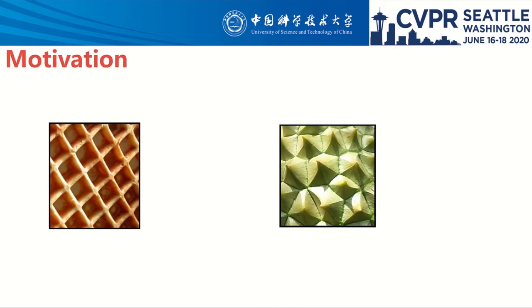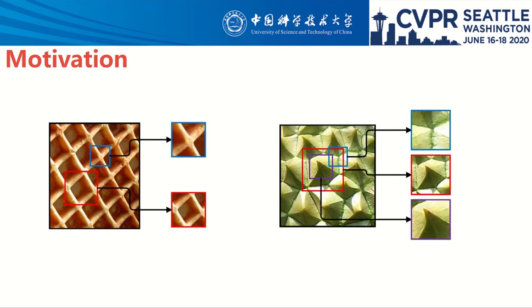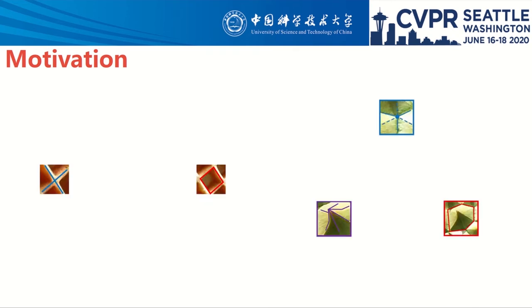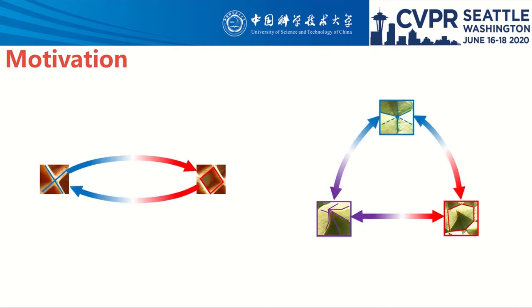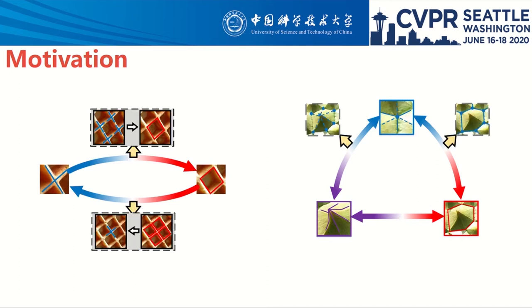Our method is based on the observation that, though various textural primitives can be perceived with different spatial context—for example, principal directions—there exists a spatial dependency among these primitives, which is invariant to spatial layout and reveals the inherent structural properties of texture. As shown, multiple primitives can be identified from the same texture image, which can bring interference to texture recognition. However, there is an inherent spatial dependency among these primitives that is invariant to spatial transformation and brightness change, implying this dependency is robust to variability in primitive appearance and spatial organization.